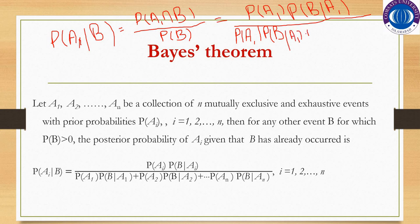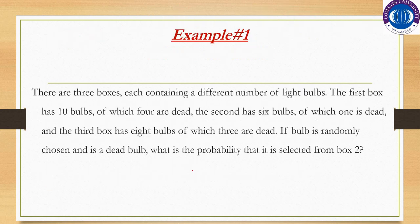Denominator में आएगा P(A1)·P(B|A1) + P(A2)·P(B|A2), plus जितने भी हमारे पास parts होंगे आगे move करता जाएगा। यह हमारे पास Bayes' theorem की form है। अगर हमने A1 find करना हो तो A1 ऊपर आजाएगा। ठीक है, example करते हैं — चीजें थोड़ी clear होने लगेंगी।